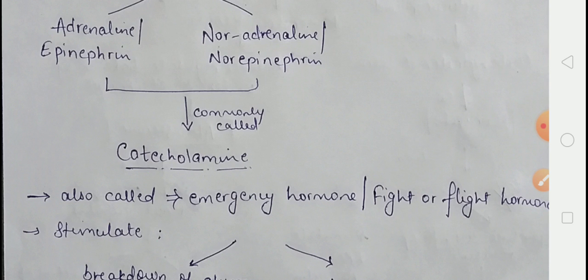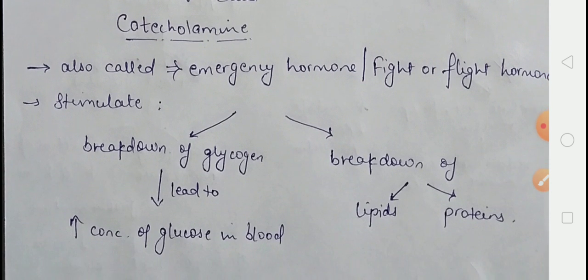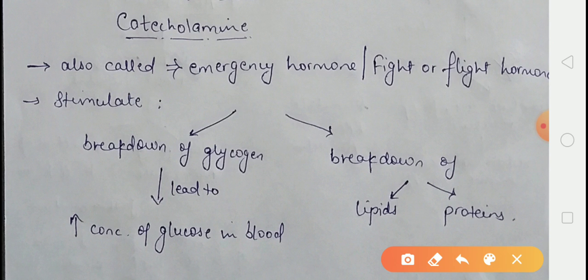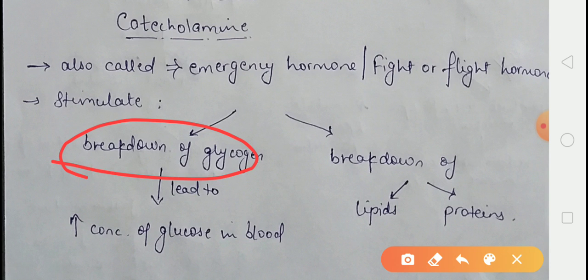These hormones increase alertness, pupillary dilation, and sweating. They also increase heart rate, strength of heart contraction, and rate of respiration. Additionally, catecholamines stimulate the breakdown of glycogen, which increases blood glucose concentration, and also stimulate the breakdown of lipids and proteins.